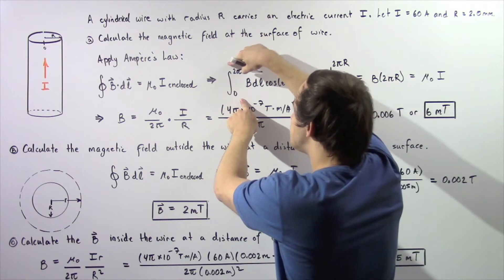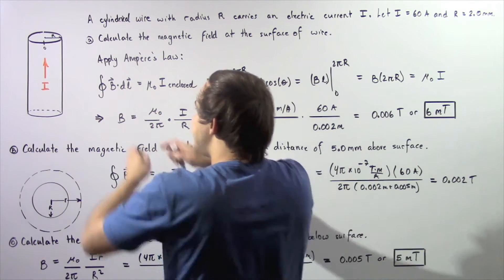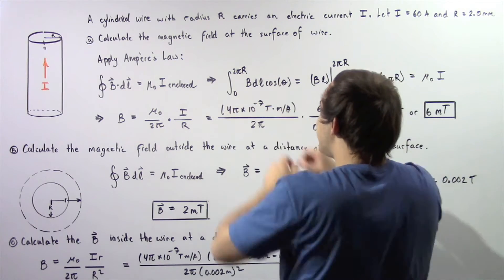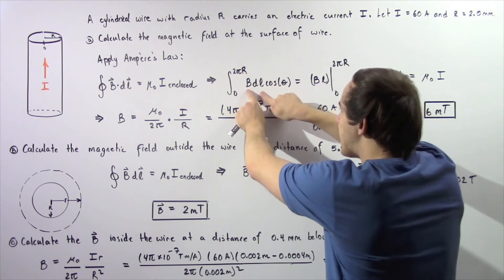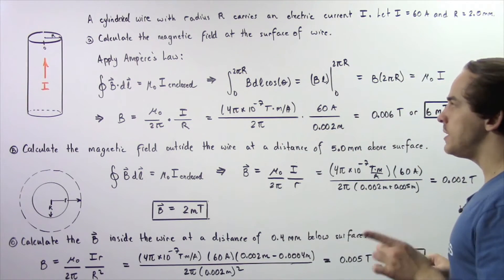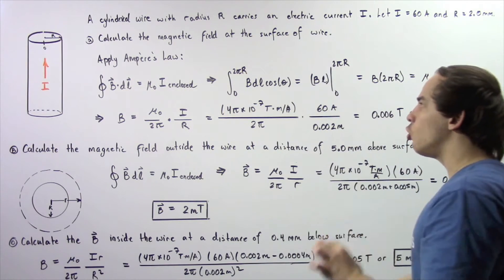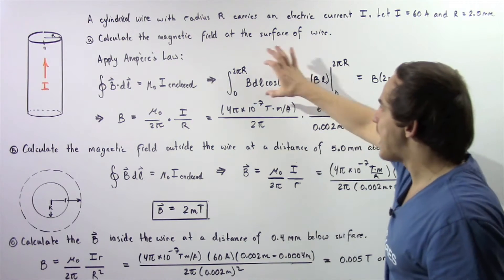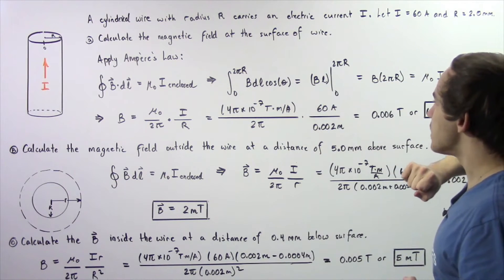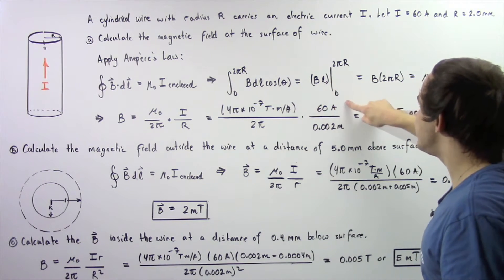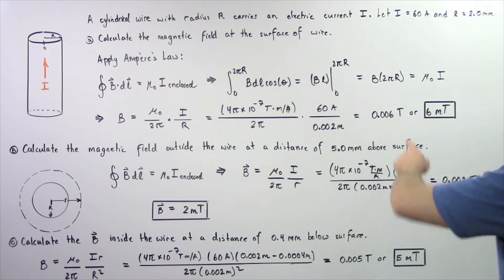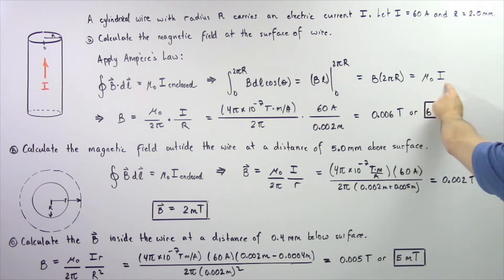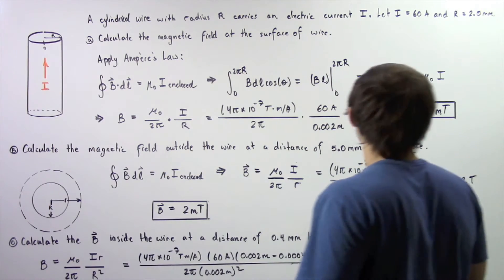We integrate from zero to the circumference given by 2π uppercase R. By definition of the dot product, the dot product of two vectors equals the product of the magnitudes and the cosine of the angle between them. By definition of Ampere's Law, the angle between these two vectors is always chosen to be zero, and cosine of zero is one. Evaluating the integral gives us B multiplied by 2πr, which equals mu naught times the current I in our wire.